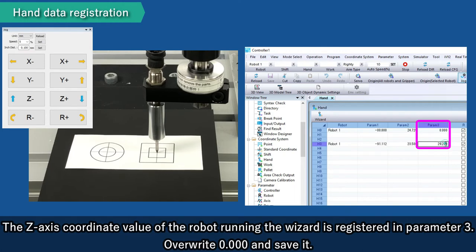The Z-axis coordinate value of the robot running the wizard is registered in parameter 3. Overwrite 0.000 and save it.